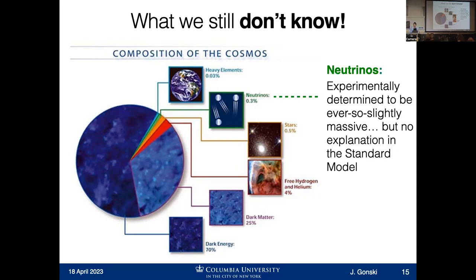One of these known matter categories worth pointing out is neutrinos. Neutrino physics is a whole other section of research ongoing here. The funny thing about neutrinos: they're very, very light particles, but they have the ever so slightest amount of mass. That is not explained in the standard model — it's an experimental observation that wasn't theoretically predicted. We'd like to have a model that covers all of the things we observe in experiments, so that's something we'd like to be able to incorporate.